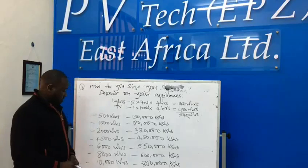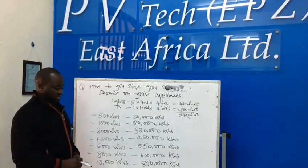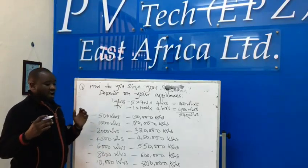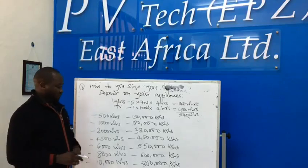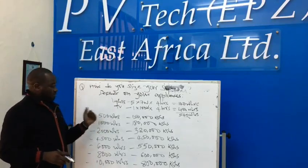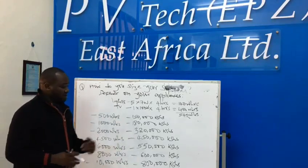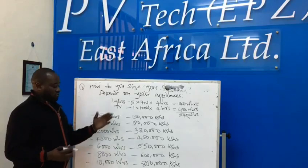A project with 6,000 watt-hours can go to about 550,000 Shillings. A project with 8,000 watt-hours can go to about 600,000, and 10,000 watt-hours can go to about 800,000 Shillings. We have a package for you depending on your watt-hours.